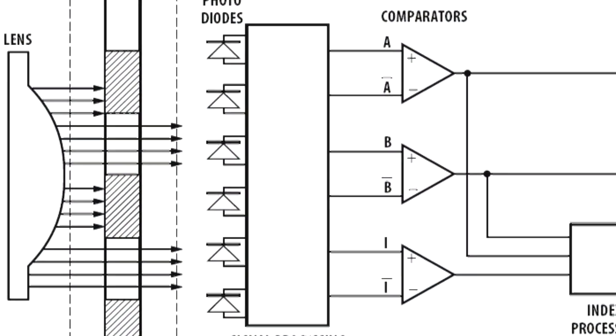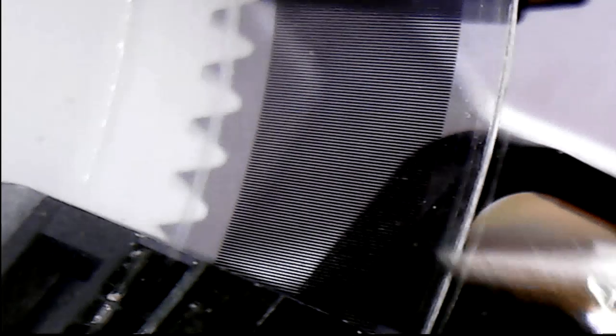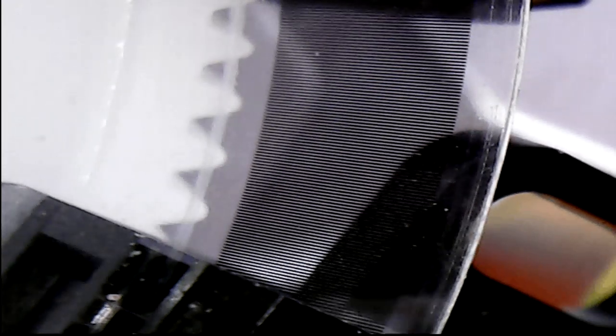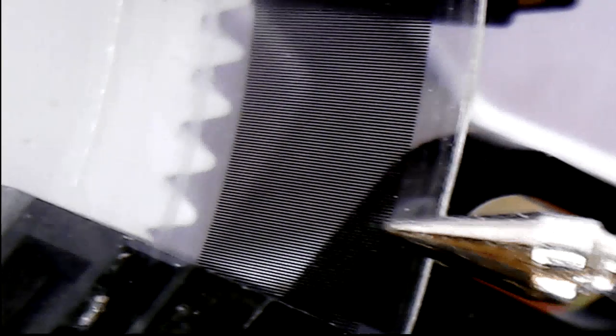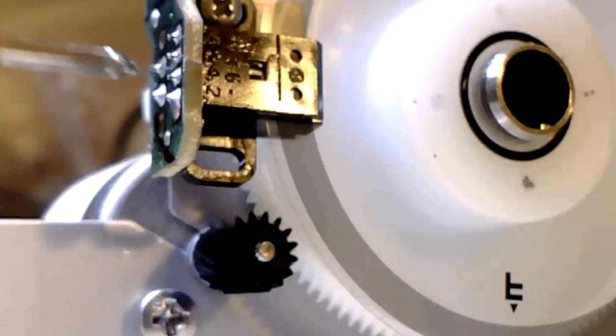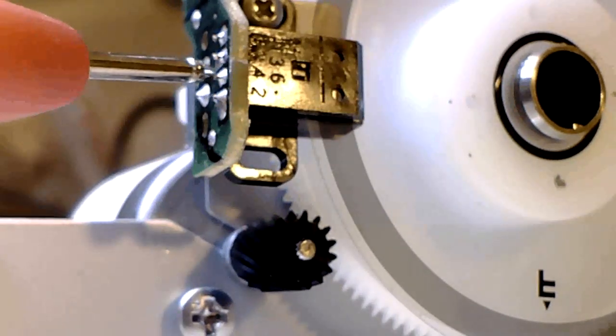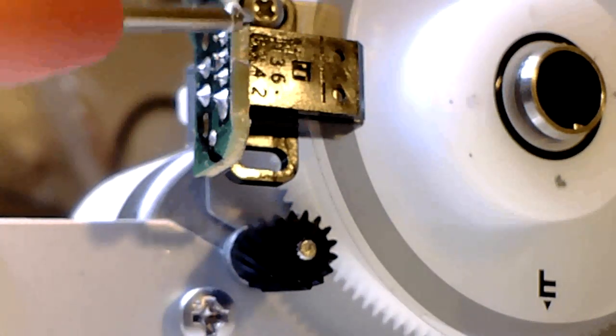I could only get one side to work, and yeah, it's a rotary encoder type device. It has six pins on it, not the usual four for an optocoupler.